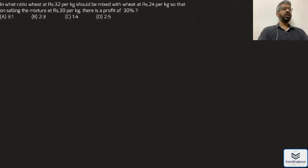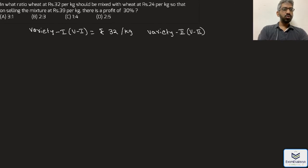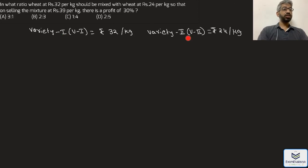In this problem, two varieties of wheat are given. Variety one (V1) is 32 rupees per kg and variety two (V2) is 24 rupees per kg. The seller is combining these two varieties to get a mixture and selling it at 39 rupees per kg, gaining a profit of 30 percent.